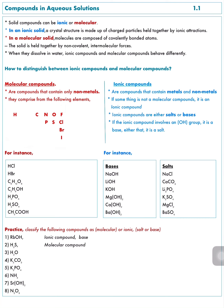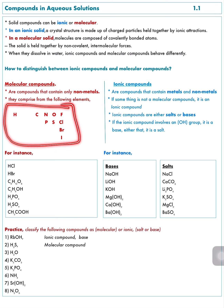You can use this table as your standard to compare all other compounds. If a compound contains elements and all of them are in this table, the compound is molecular; otherwise it is ionic. For example, NaCl contains two elements: Na and Cl. Cl is in the table, but Na is not, so NaCl is an ionic compound.